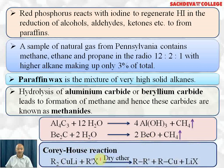Corey-House synthesis is most important for getting unsymmetrical alkanes or alkanes containing an odd number of carbon atoms, which cannot be prepared by Wurtz reaction. Here we take dialkyl copper lithium and react with a suitable alkyl halide having different alkyl groups in the presence of dry ether as solvent. We get alkane plus alkyl copper plus lithium halide.